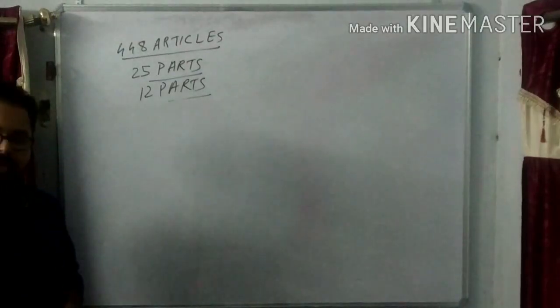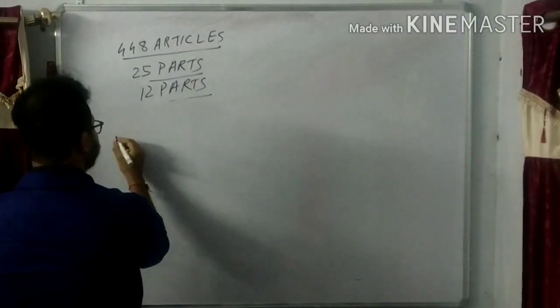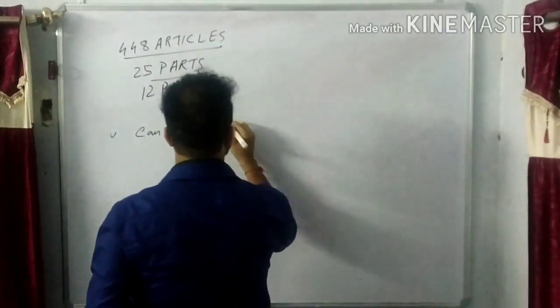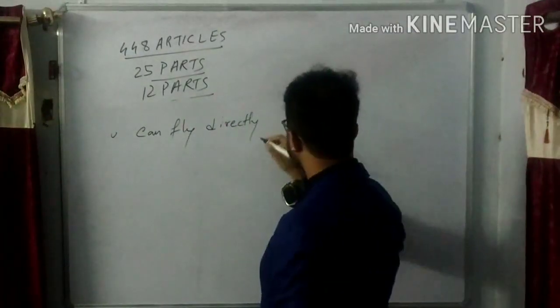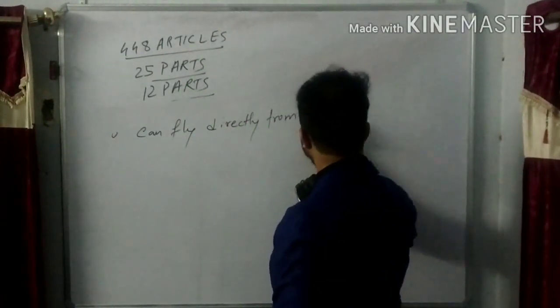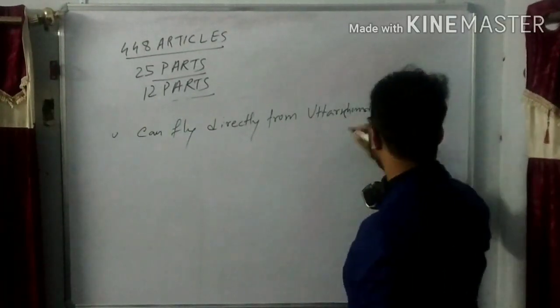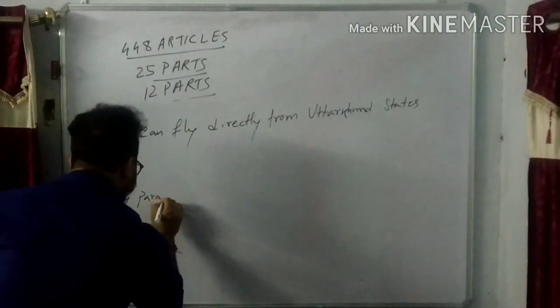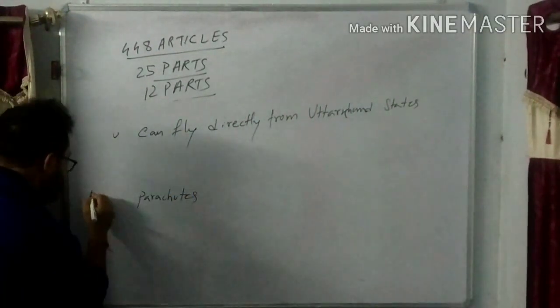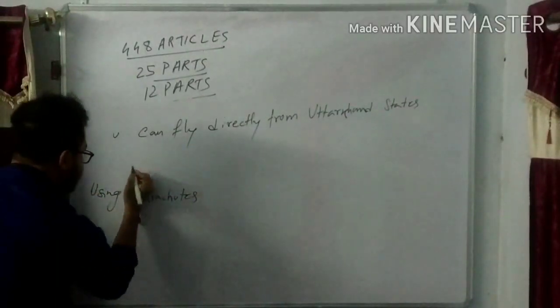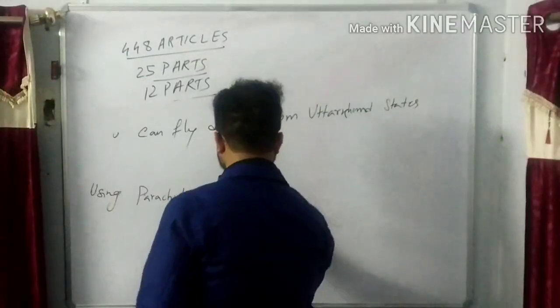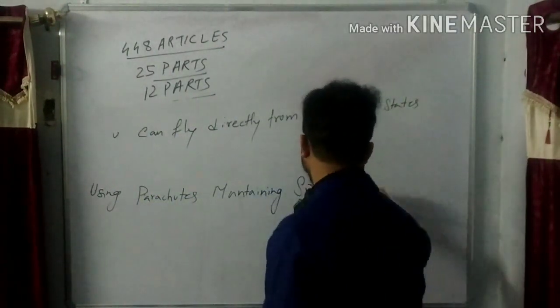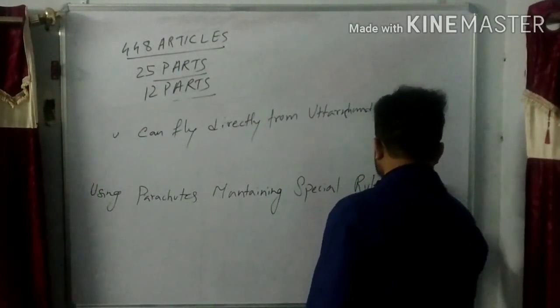So what is the sentence? Let's see. The sentence is: You can fly directly from Uttarakhand state by parachutes - actually, using parachutes - maintaining special rules or regulations.